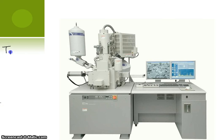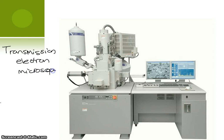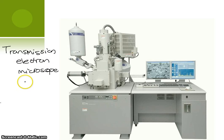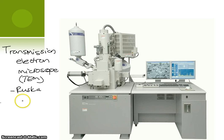Microscope development didn't stop there. The first of the next generation is called a transmission electron microscope. What that does is, instead of shining light through the sample, it transmits electrons. Those electrons, when they come through on the other side, hit a photographic plate which can then be developed to produce your image. This is your TEM, and it was developed by a gentleman called Ernst Rusker in the early 1900s.